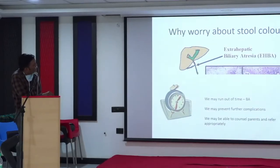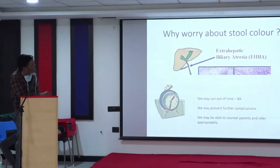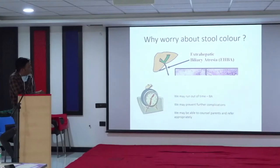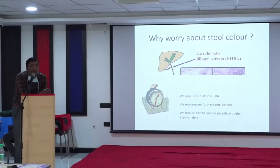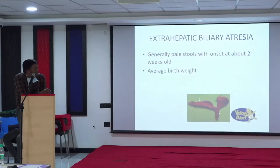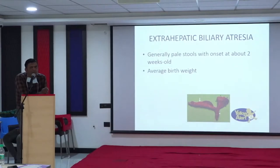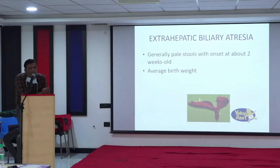In biliary atresia the channels have become very narrow and are like a cord. We may run out of time to correct it properly if you don't detect it on time. If you do not operate a child with this kind of problem within two months of age, the operation usually may not be successful. This condition sometimes may result in children needing a liver transplant. Stools must be yellow - green and brown are acceptable - but white, pale, or pale shades are not acceptable.